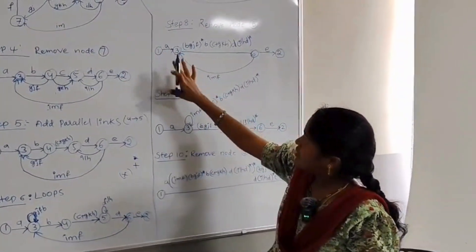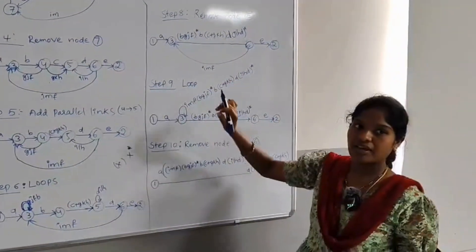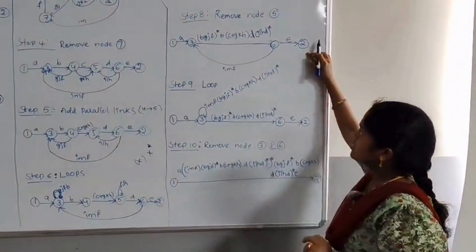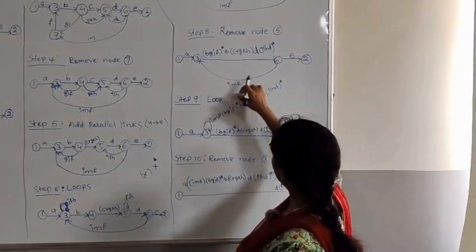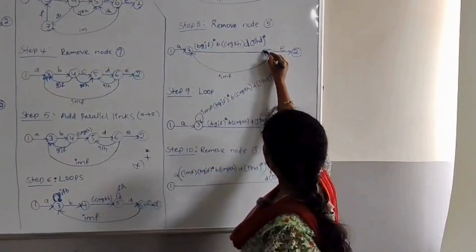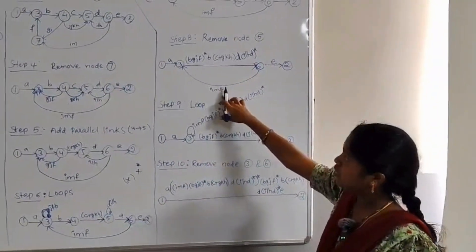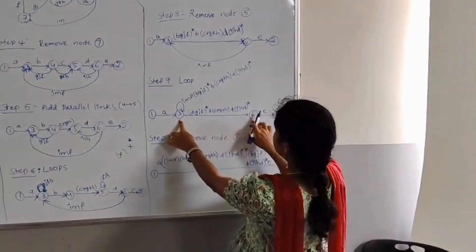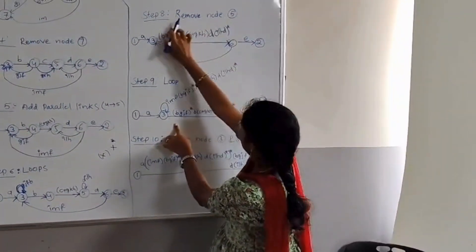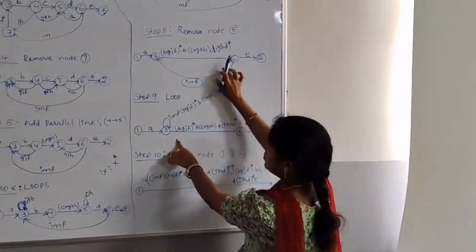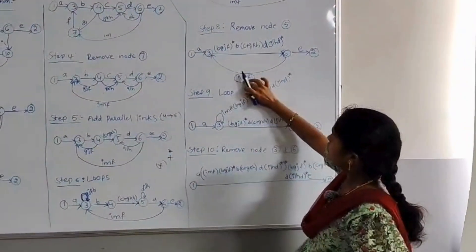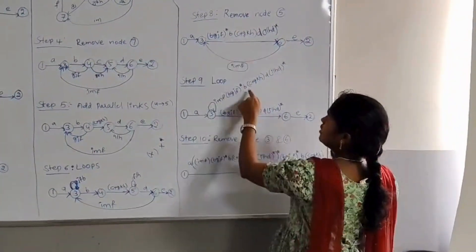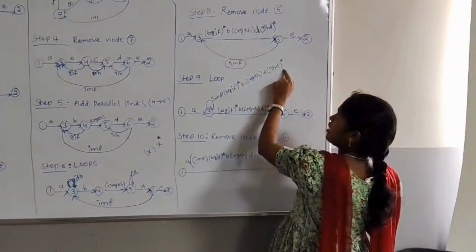Finally, we have to get the expression without removing the initial node and the final node. Other than the initial and final node, we have 2 more nodes — 3 and 6 — which also have to be removed. There is a link from 6 to 3 and from 3 to 6, so this will also become a loop. The link weight from 6 to 3 is IMM. Considering these 2 links in serial order, we multiply IMM with the expression, giving IMM × BGJF whole star × B × (C + GKH) × D × ILHD whole star.